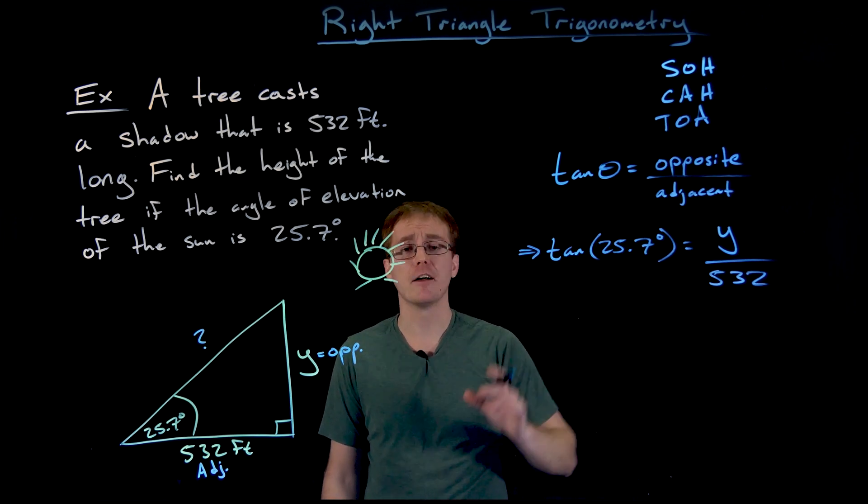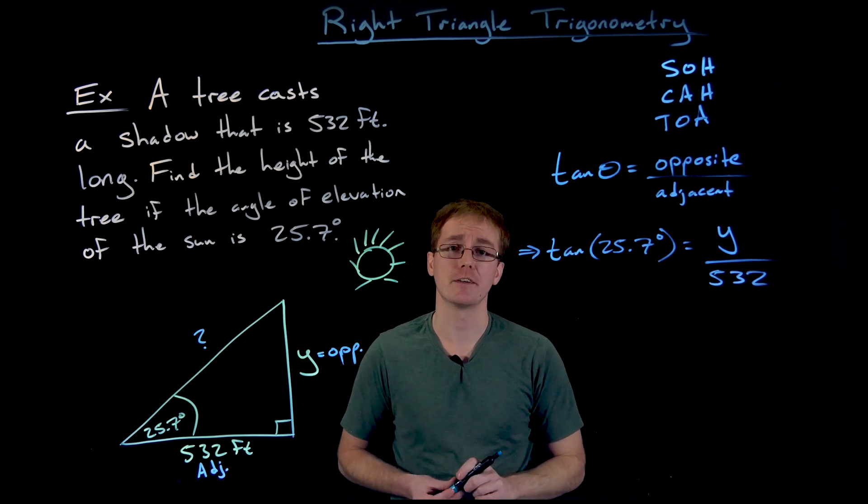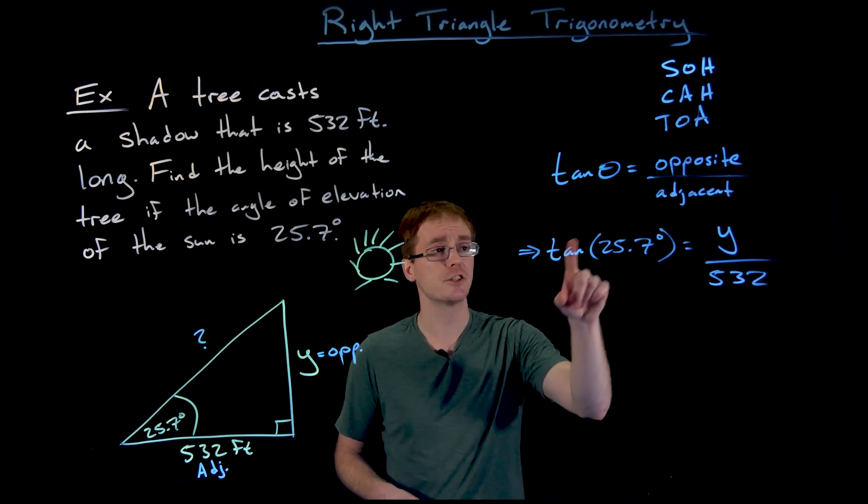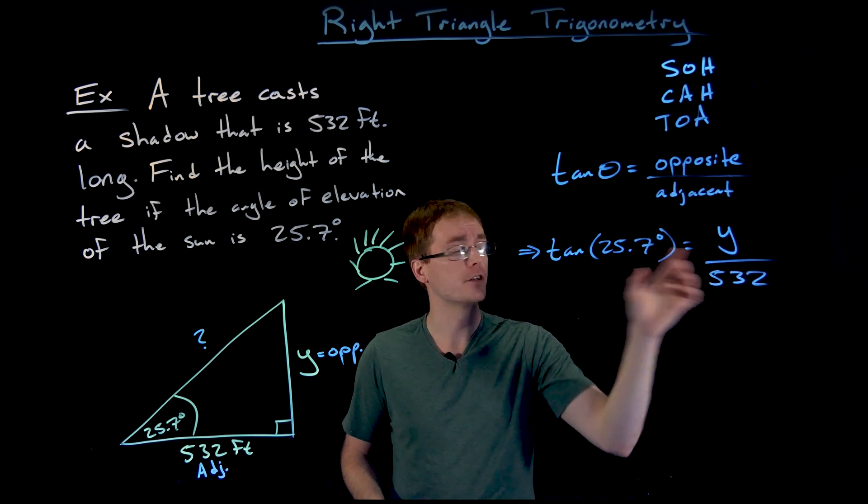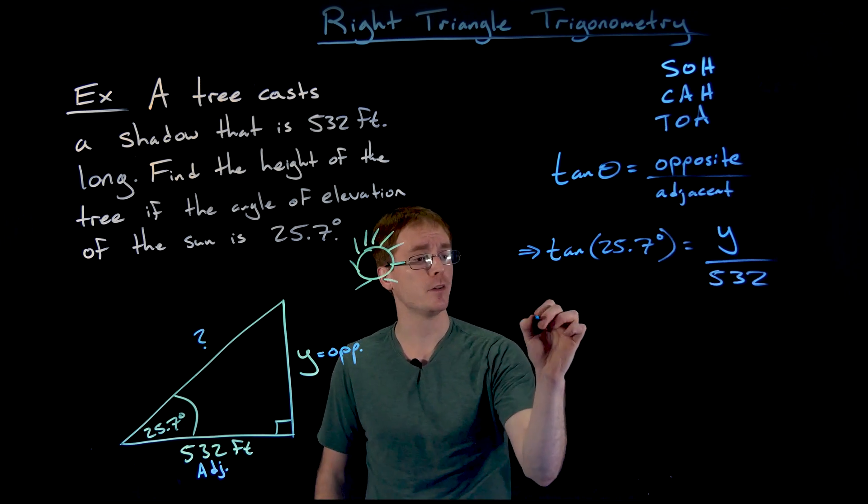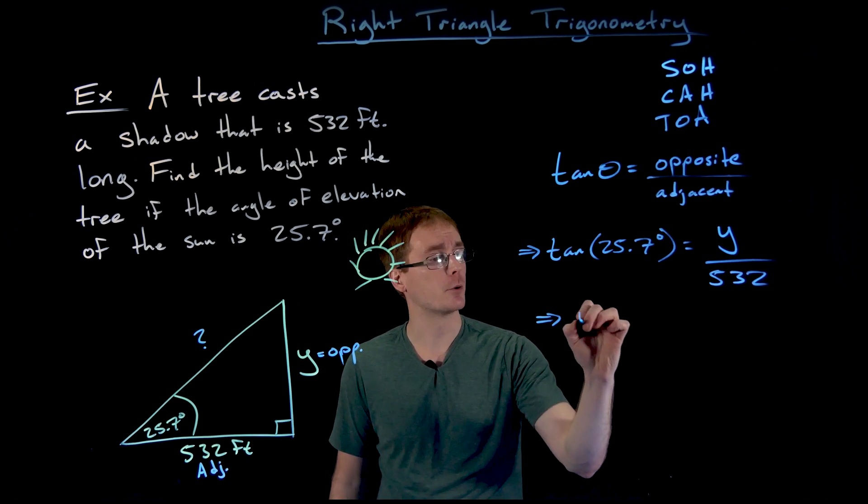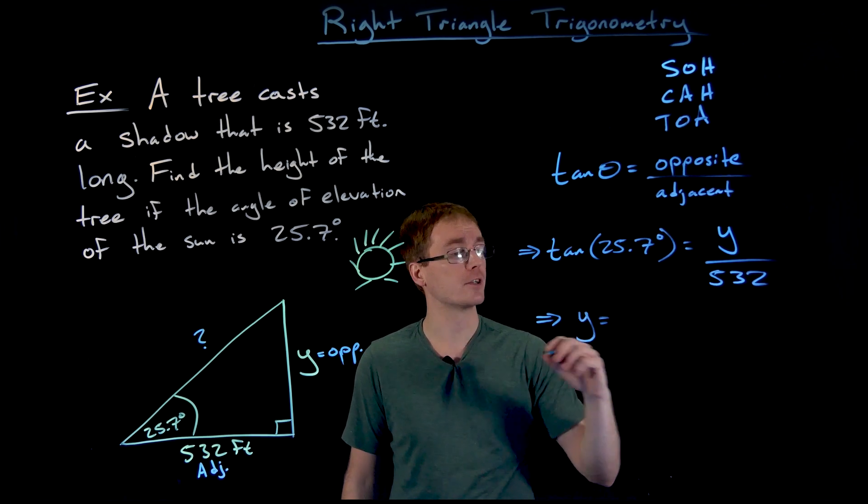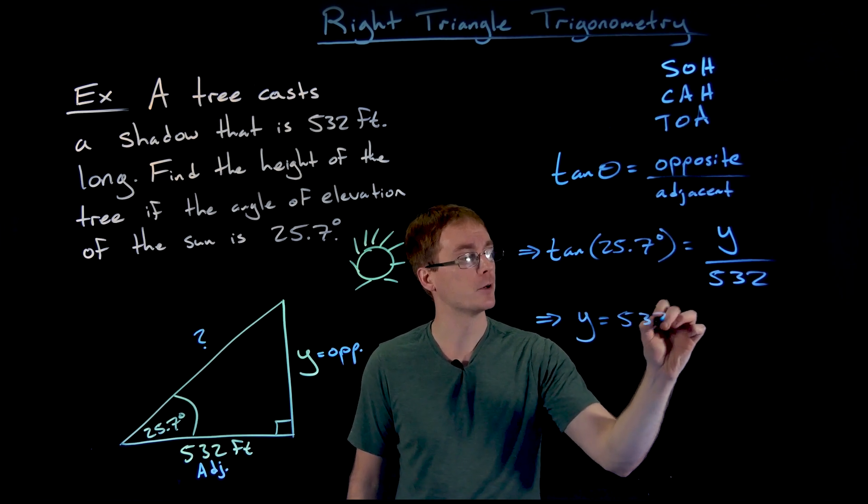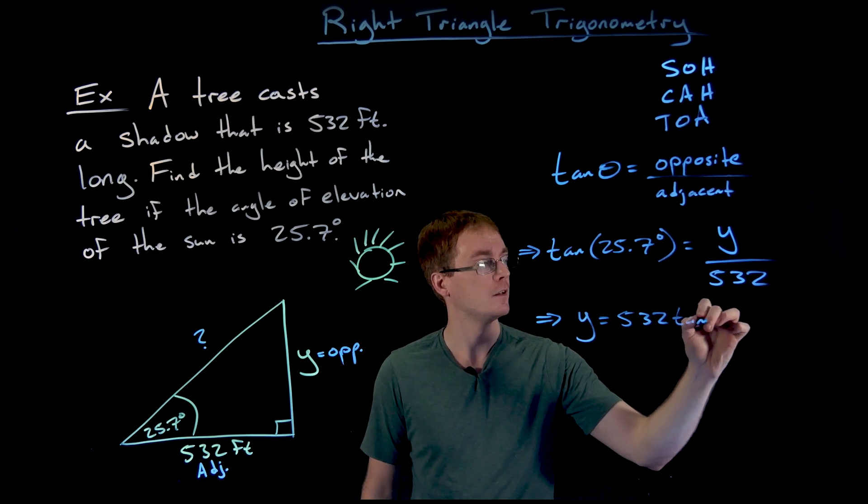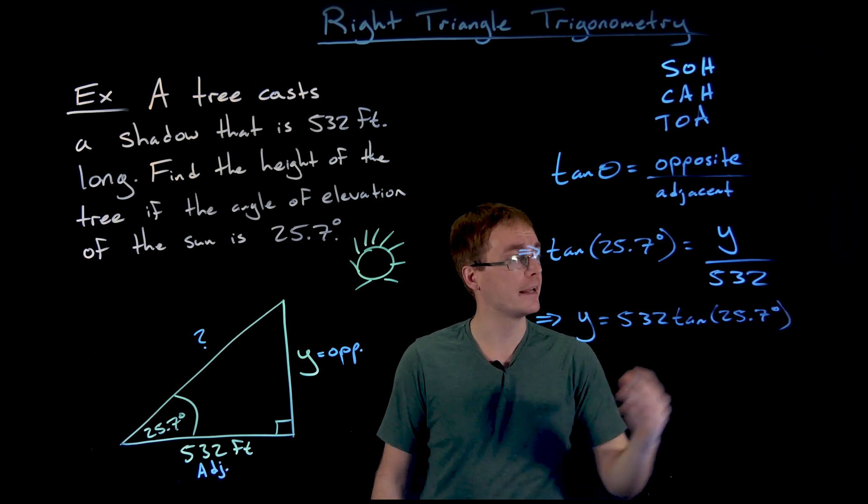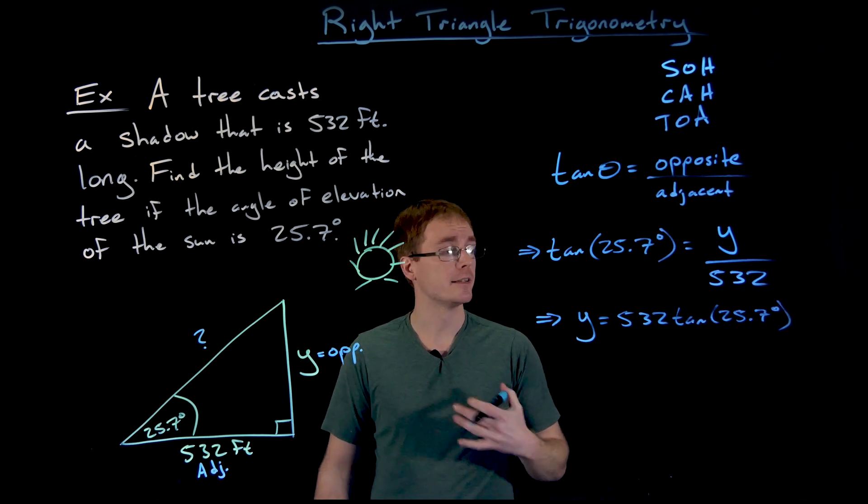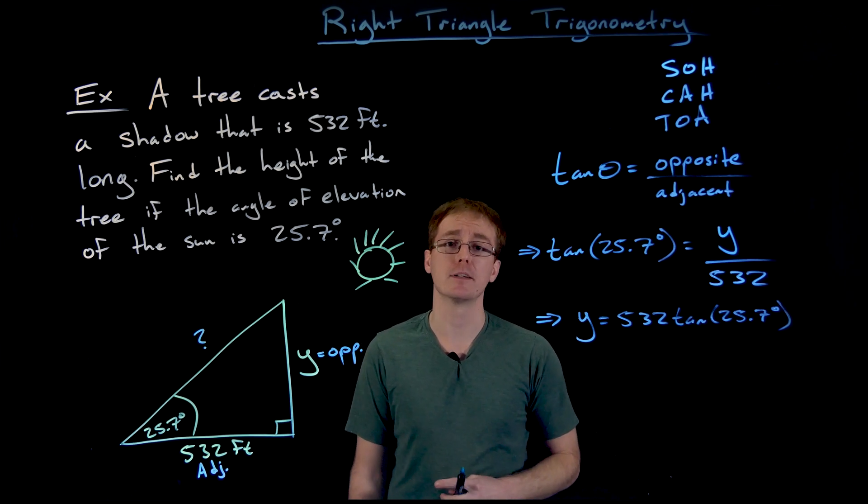We have not yet evaluated tangent of 25.7 degrees. But once we do that using a calculator, it's just going to give us a number. So we have some number is equal to y divided by 532. It's actually not too hard to solve this equation for y. Just clear that denominator. Multiply both sides by 532. And we see that an exact value for y is 532 times tangent of 25.7 degrees.